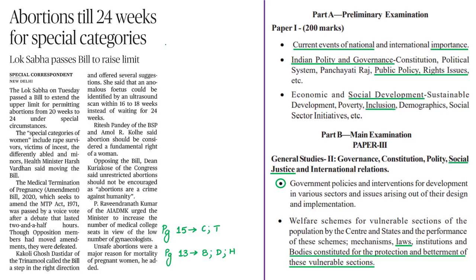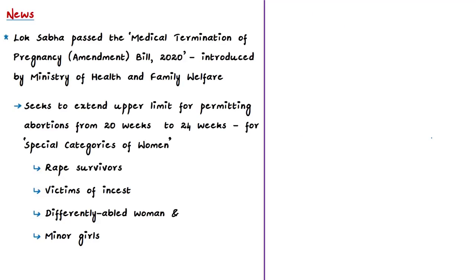The next news article is about the Medical Termination of Pregnancy Amendment Bill 2020. We will see what the Medical Termination of Pregnancy Act of 1971 is and the significant amendments proposed in the 2020 bill. Lok Sabha on 17th March 2020 passed the Medical Termination of Pregnancy Amendment Bill of 2020, which was introduced by the Ministry of Health and Family Welfare on 2nd March 2020.